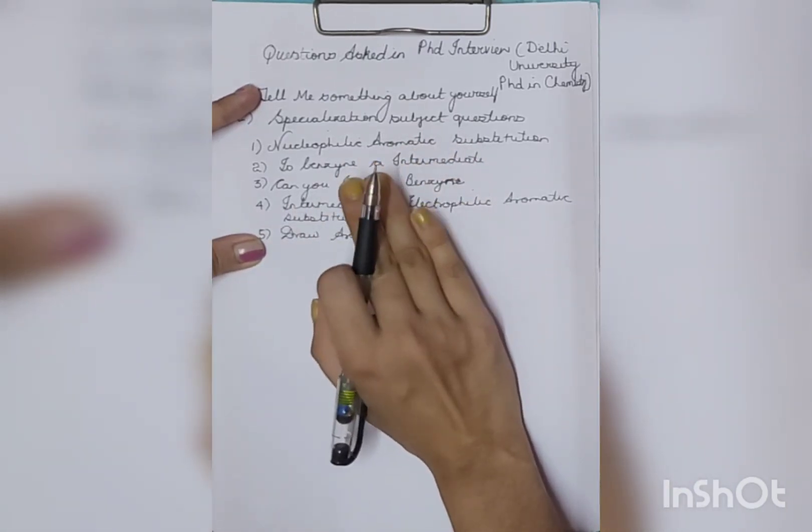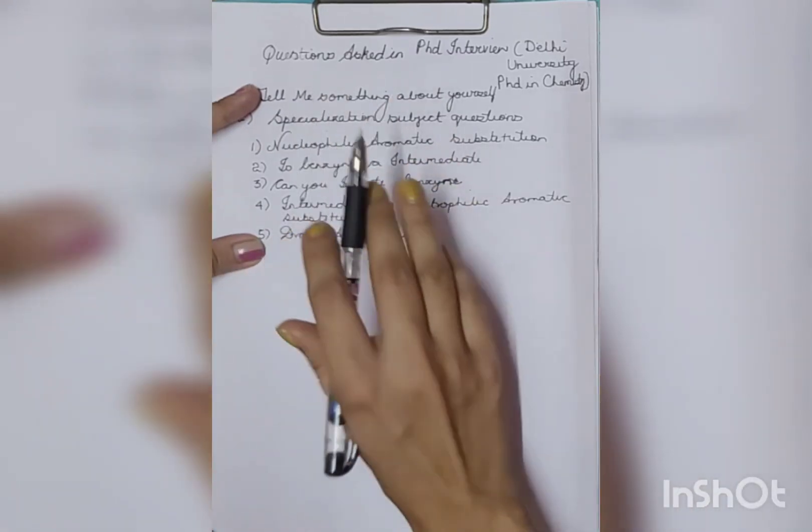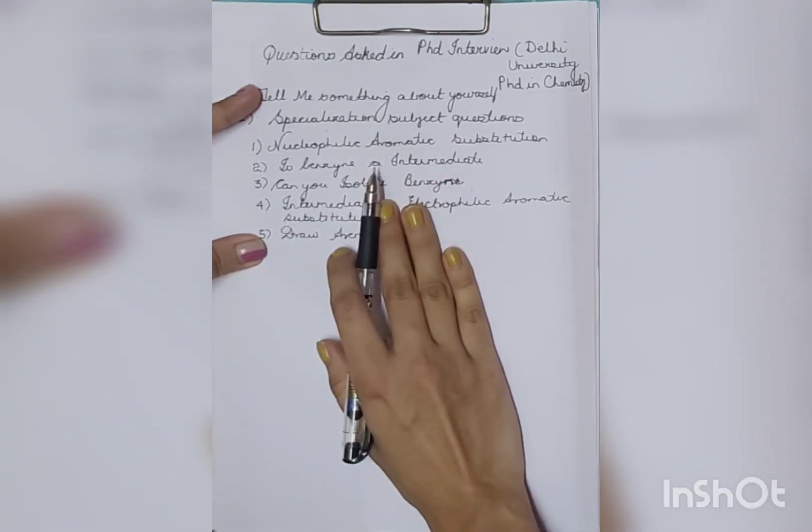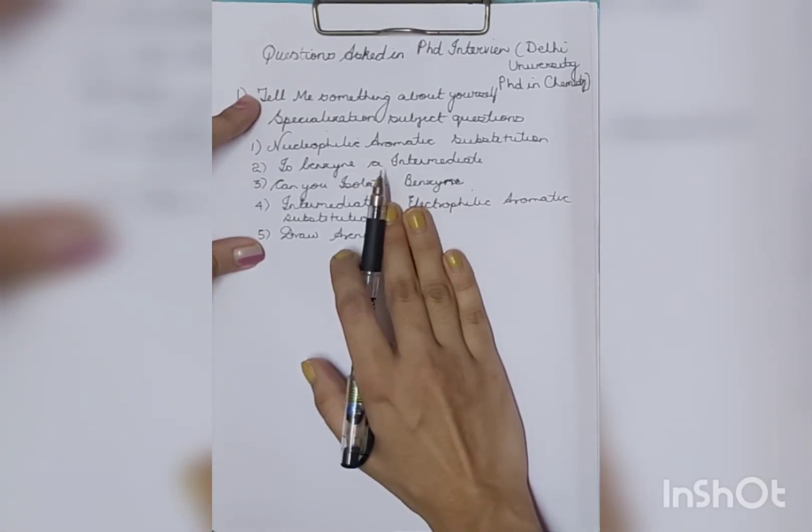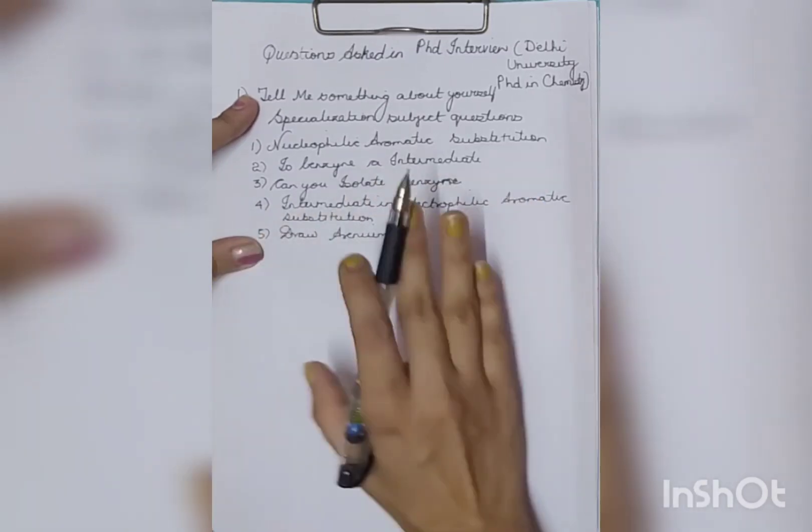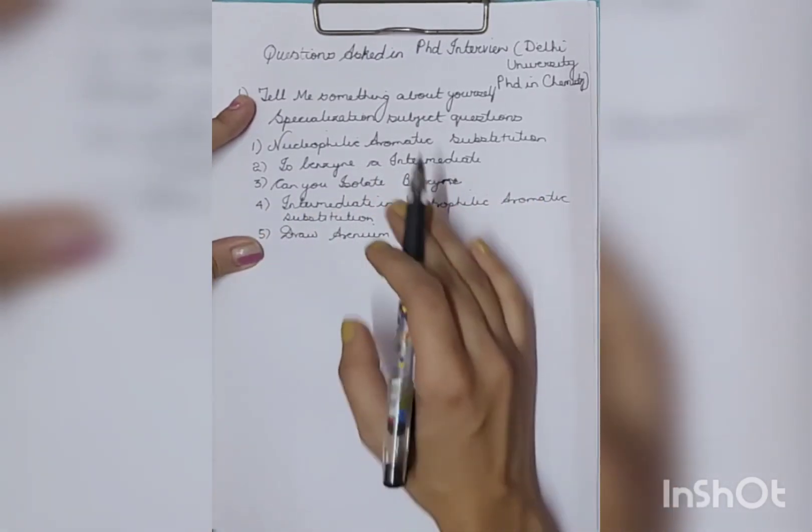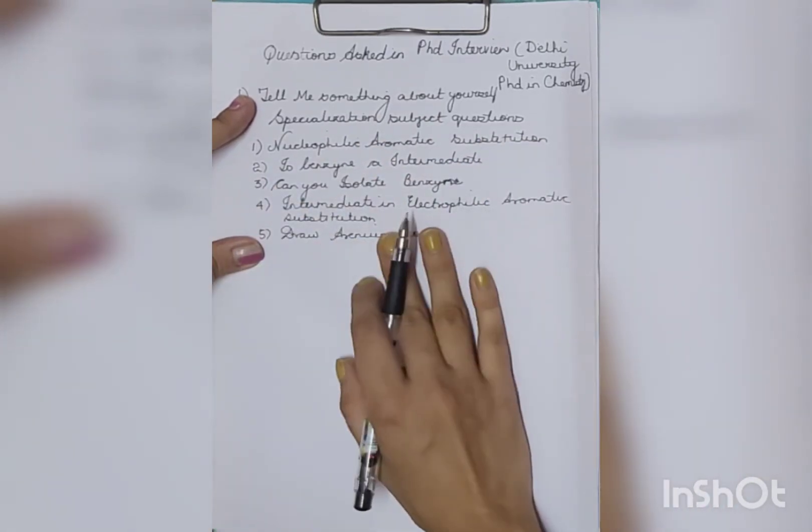Sometimes it happens that we cannot recollect the questions at that point in time. So what happened - first three questions obviously they asked, and there were approximately 300 people who were shortlisted for the interviews. Actually there was online interview and offline interview also.